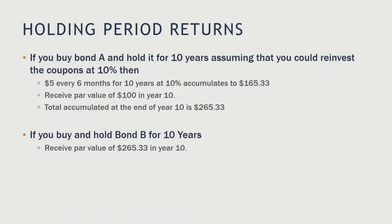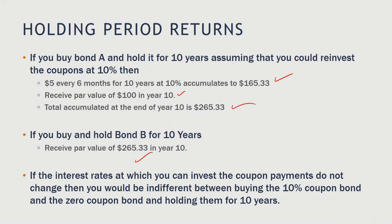Now consider a holding period return — how much you will have depending on how long you hold the bond. If you buy Bond A and hold it for 10 years, reinvesting coupons at 10%, they accumulate to $165.33. Adding the par value of $100, your total at the end of 10 years is $265.33. If you buy and hold Bond B for 10 years, you also receive $265.33. If reinvestment rates don't change, you'd be indifferent between the two bonds.